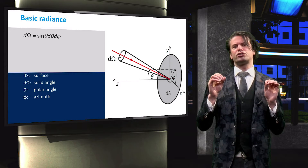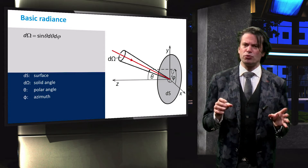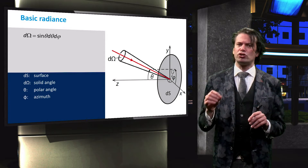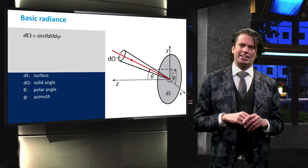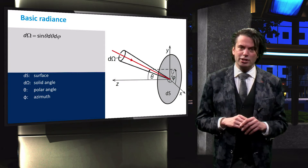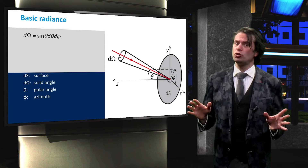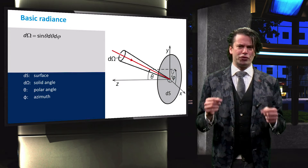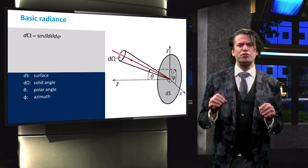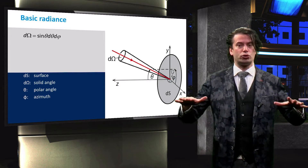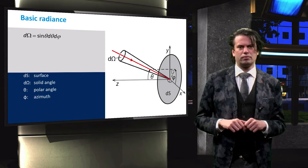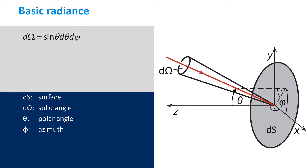For our discussion of basic radiance, we assume a surface S that is irradiated by light. To obtain the total power that is incident on the surface, we have to integrate over the whole surface. We also have to take into account that light is incident from all the different directions.